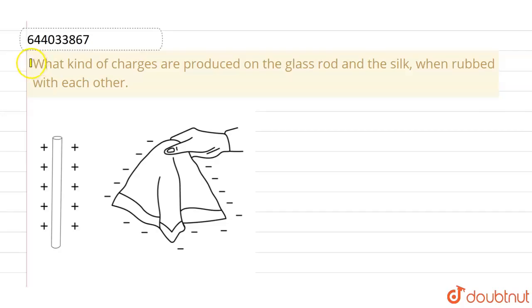This given question is: what kind of charges are produced on the glass rod and the silk when rubbed with each other? So we have to basically tell what type of charges will glass rod and silk acquire when they are rubbed against each other.